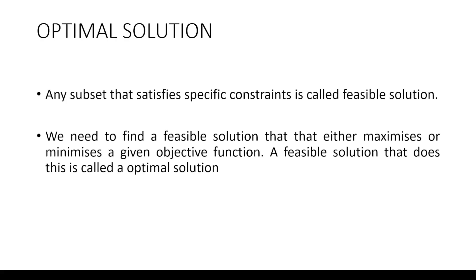Now let us see what is an optimal solution. We have various subsets that satisfy specific constraints, which we call feasible solutions. We need to find a feasible solution that either maximizes or minimizes a given objective function. A feasible solution that does this is an optimal solution — the best possible solution that can be achieved given the constraints of the problem, and the most efficient solution found using a specific algorithm.